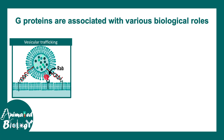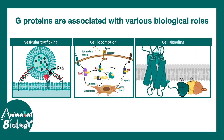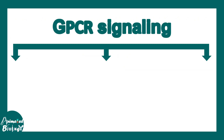Monomeric G proteins are associated with processes like vesicular trafficking and cell locomotion. Trimeric G proteins are associated with cell signaling. In this video we are going to focus mostly on the role of trimeric G proteins and the coupled receptor in the cell signaling pathway.